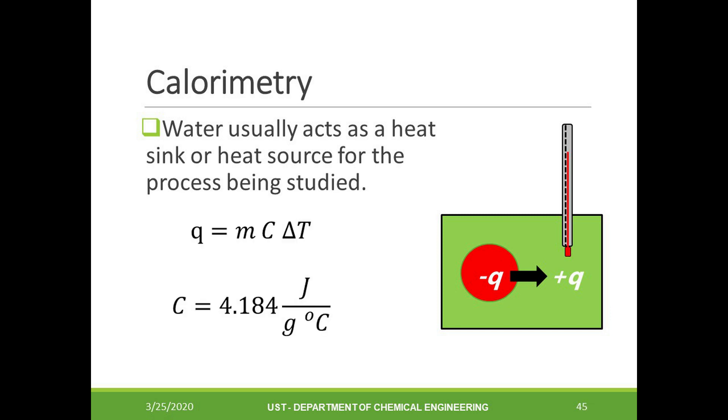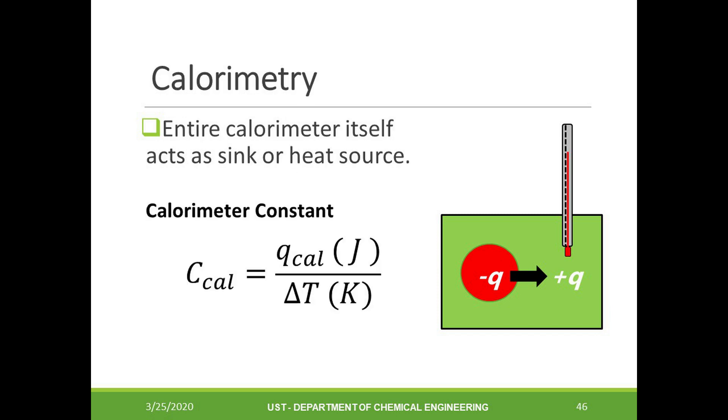We can use q equals m C delta T to correlate any temperature change with the heat flow of our material. For water, the specific heat capacity is equal to 4.184 joules per gram per degree Celsius. Sometimes we just use the entire calorimeter as the heat source or heat sink, so in this case we can just use the calorimeter constant to correlate the temperature change with the corresponding heat flow.